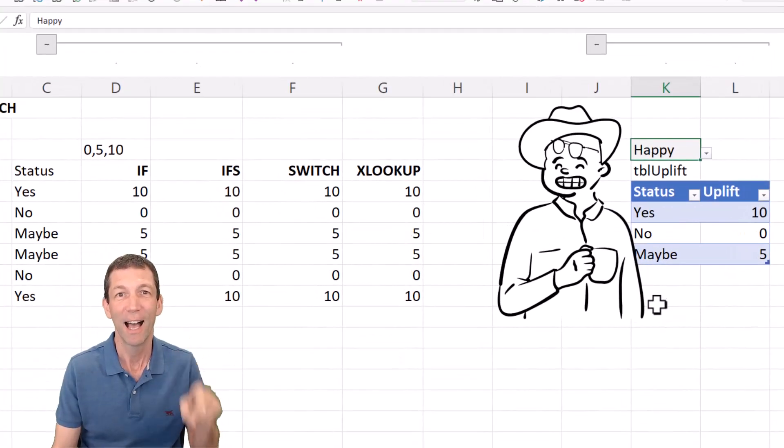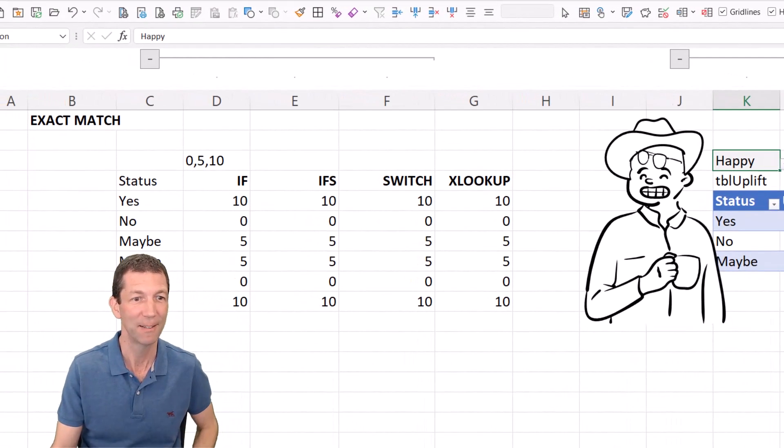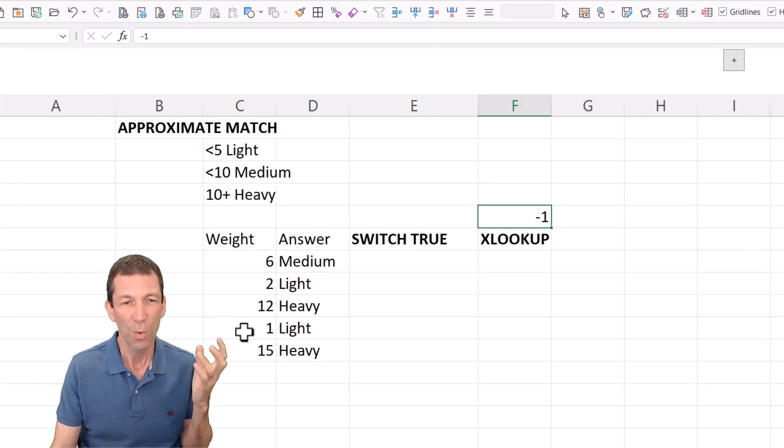Let's take a look at an approximate match instead. So here we go, I want to find everything less than 5, I want to flag it as light, less than 10 medium, greater than that heavy. So here's the answers.